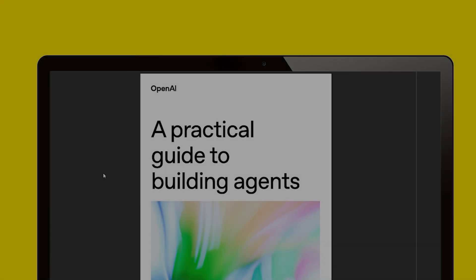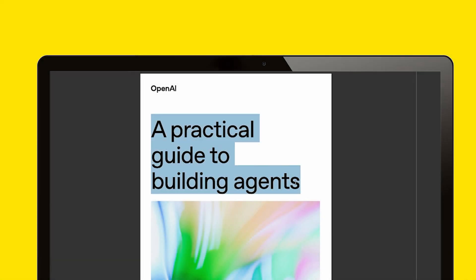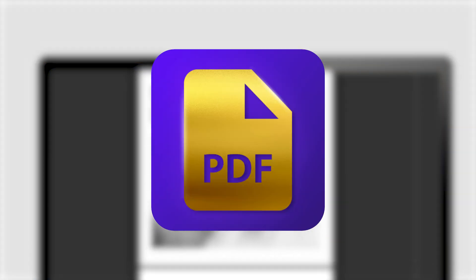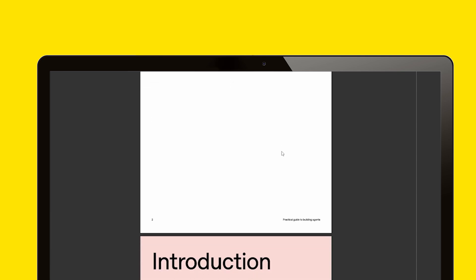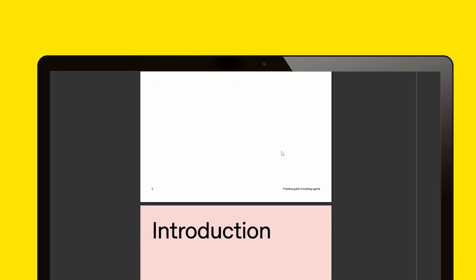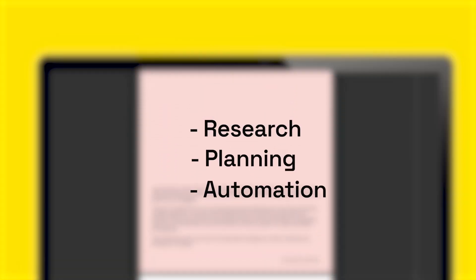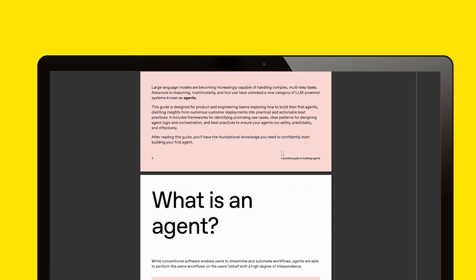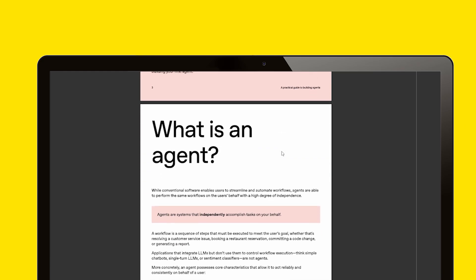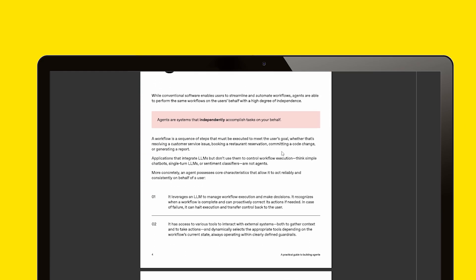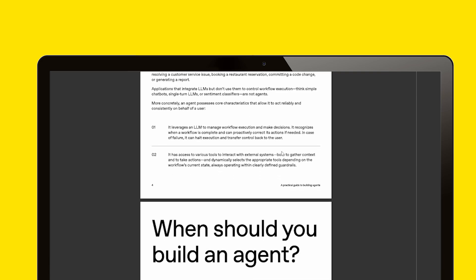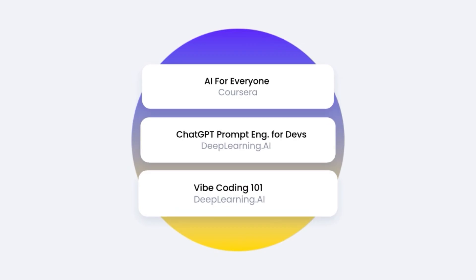The last one is the Practical Guide to Building AI Agents. This is not a course exactly, but it's a goldmine PDF by OpenAI. It's short, clear, and teaches you how to build AI agents that can do tasks like research, planning, or automation. It's a free downloadable PDF where you will learn what AI agents are, how to design workflows, how to build AI agents, and a lot more.